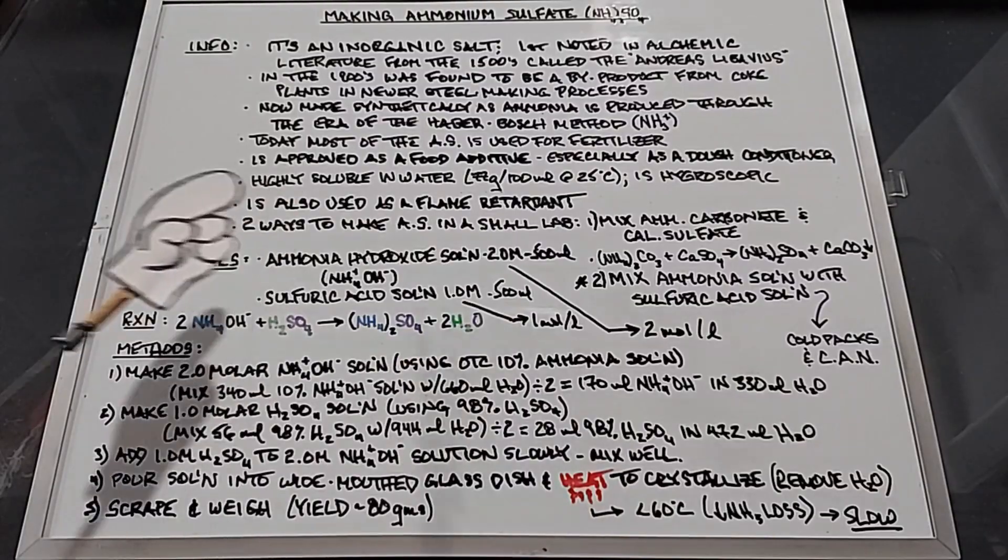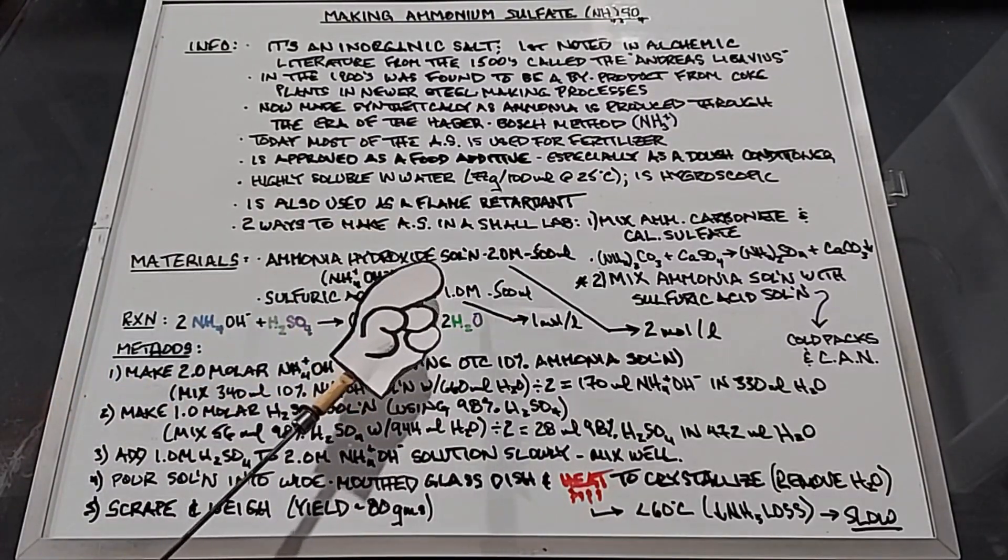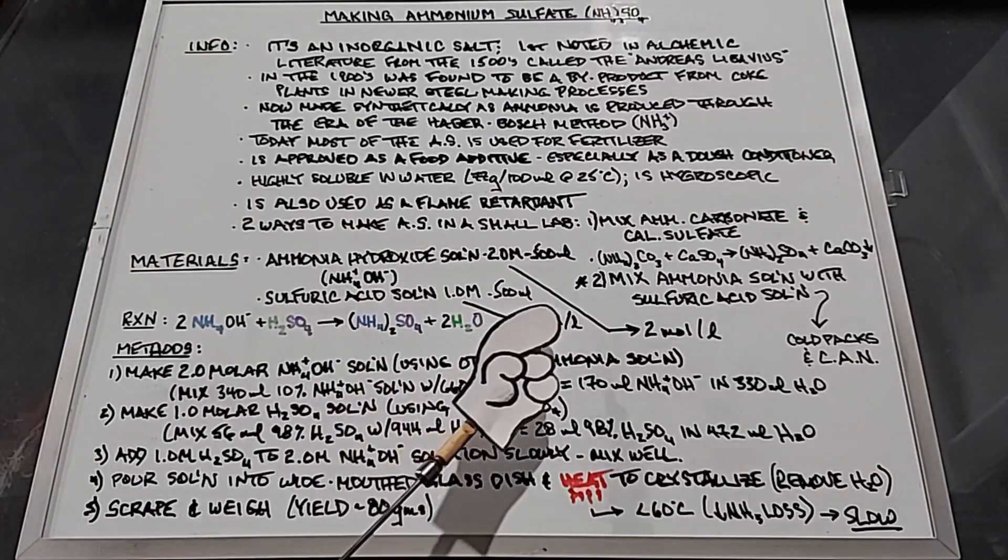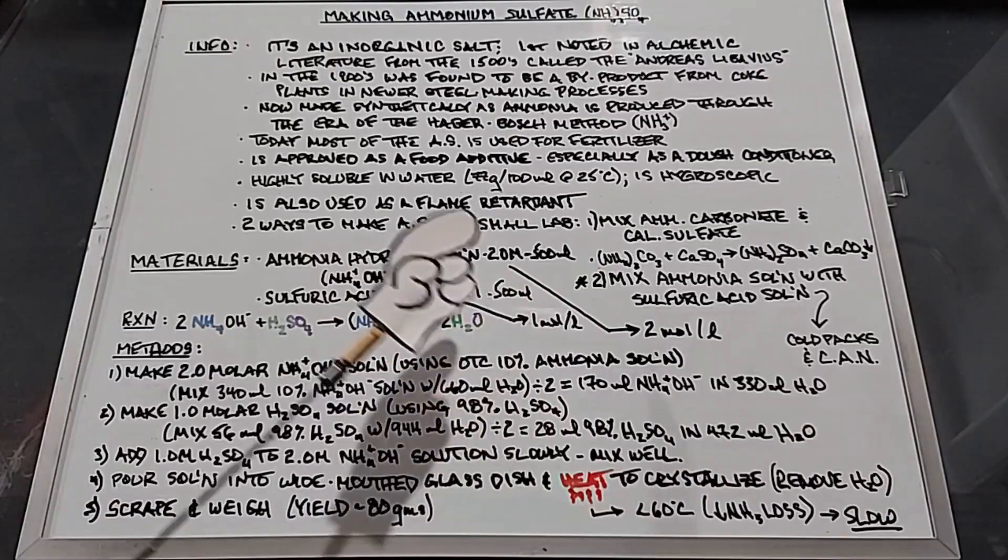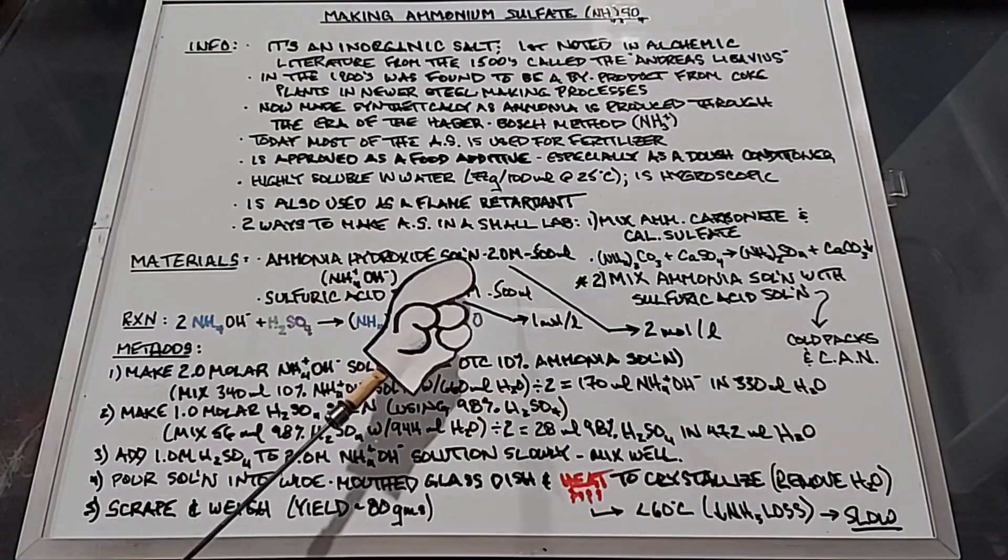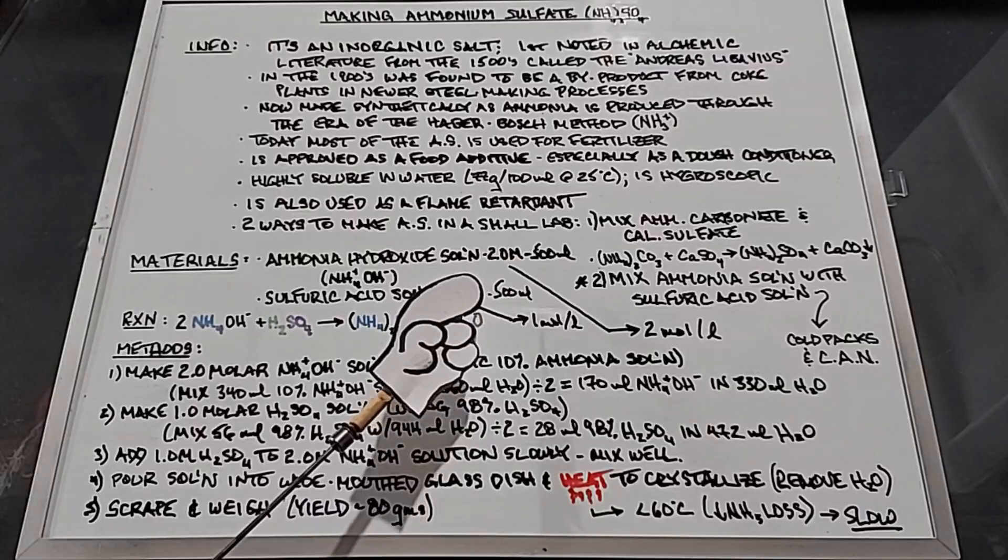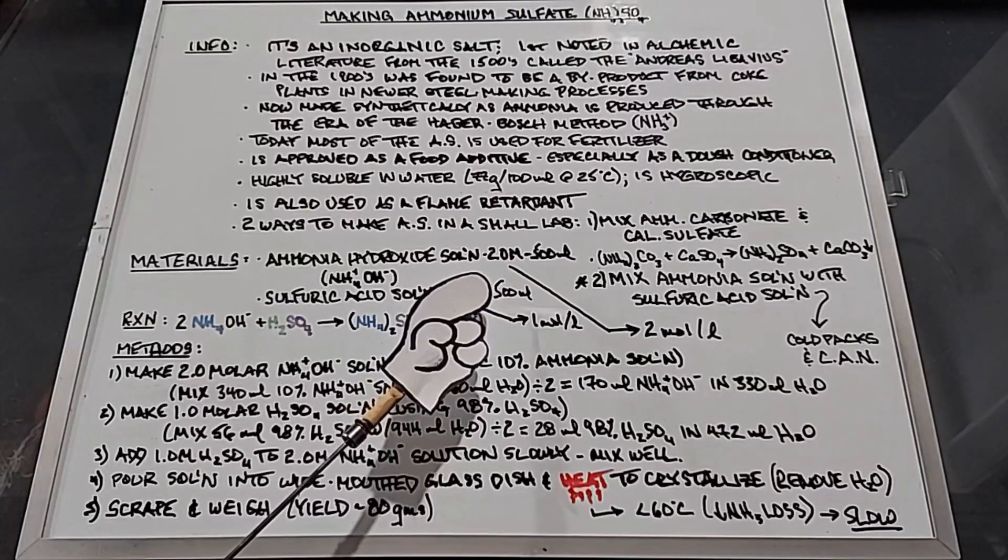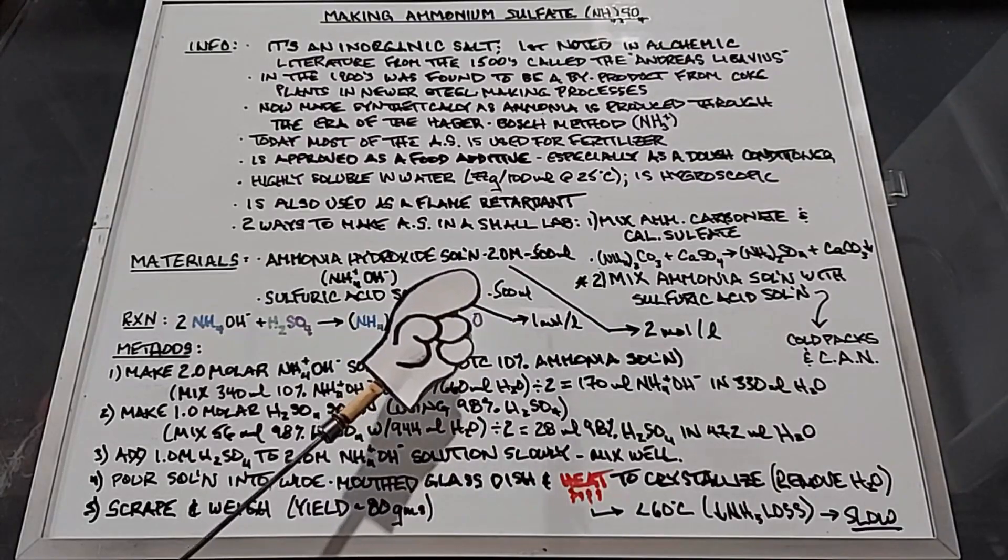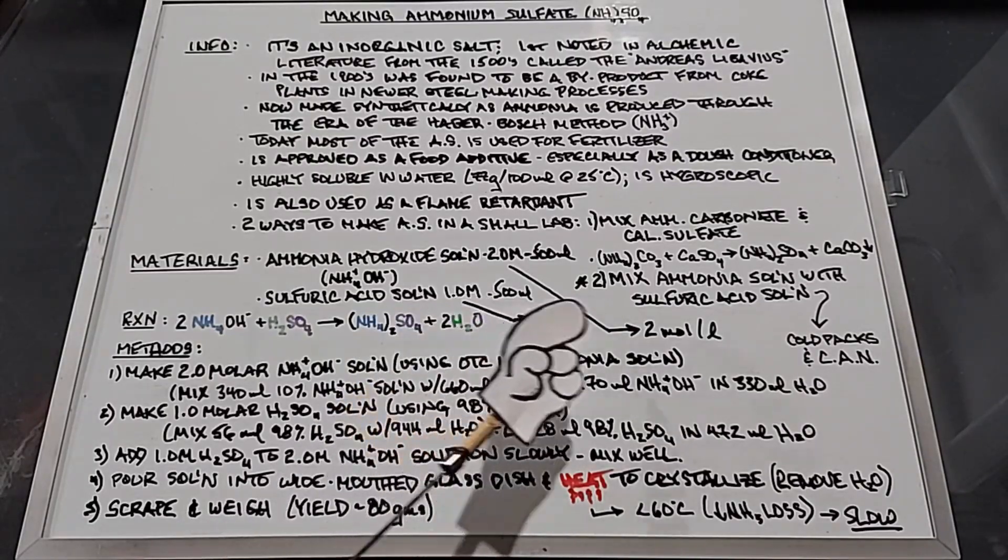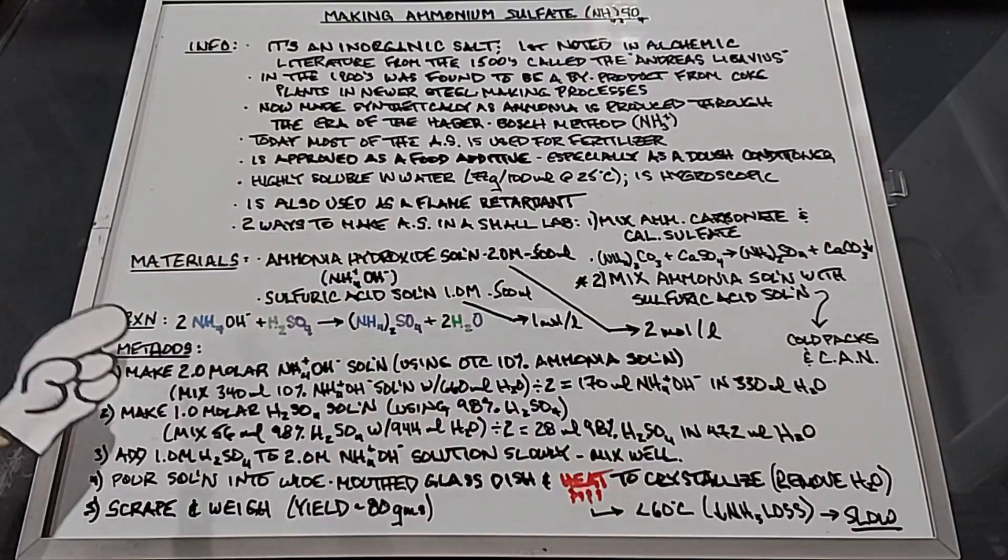The second thing we need is a sulfuric acid solution. We need a one molar sulfuric acid solution which again is one mole per liter. We'll figure out how to do that and then divide it in half to come up with 500 milliliters. The reason I'm doing 500 milliliters is because using a full liter for both of these means a lot of water in the end needs to be dehydrated.